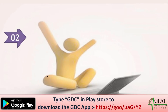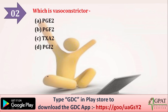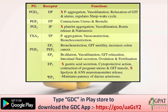Next question: which is the vasoconstrictor? Option A: PGE2. Option B: PGF2. Option C: TXA2. Option D: PGI2. The correct answer is TXA2. Let's discuss with the help of an explanation using a table of prostaglandins, their receptors, and functions.